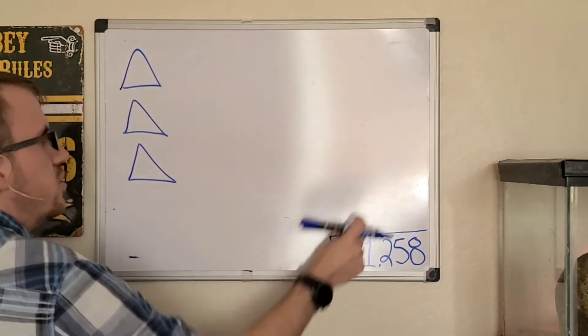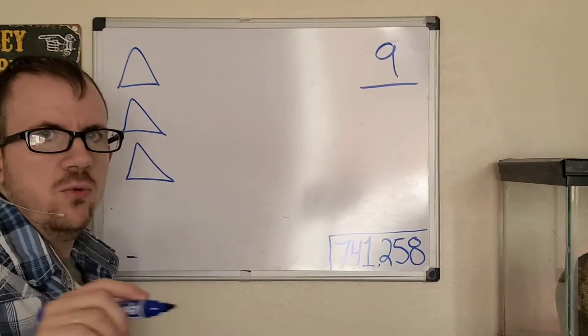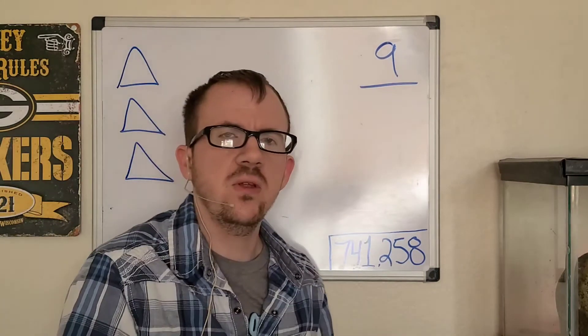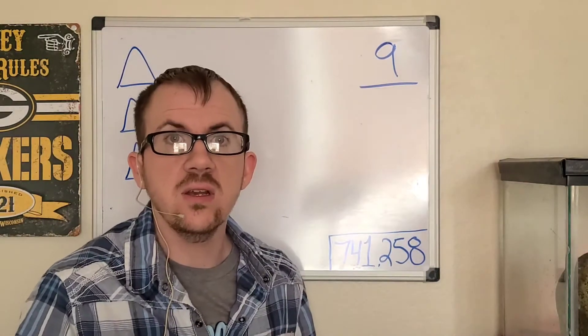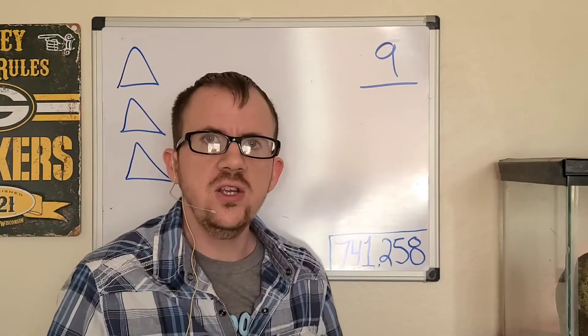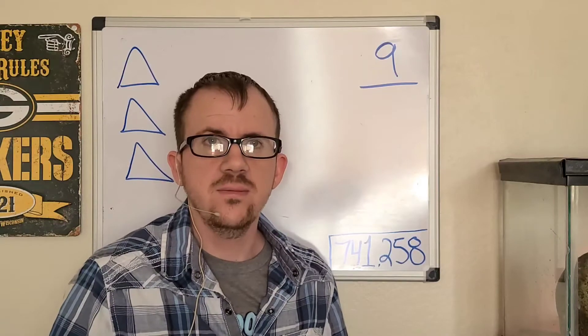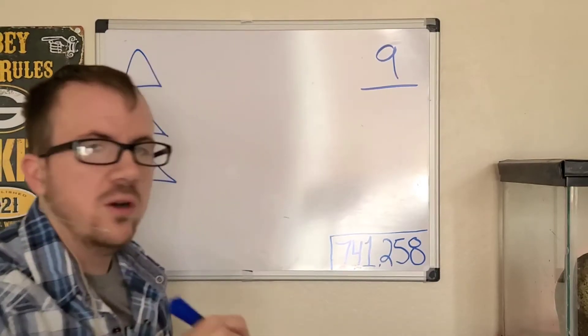First off, anybody that knows me knows that nine is the most important number. If you don't know this yet, I'll explain it very simply. If you add one through eight, you get thirty-six, three plus six is nine. If you add one through nine, you get forty-five, and four plus five is nine.